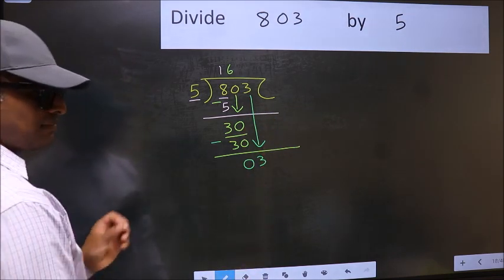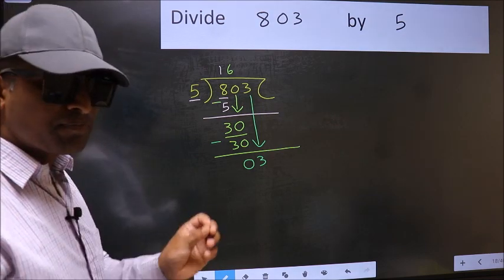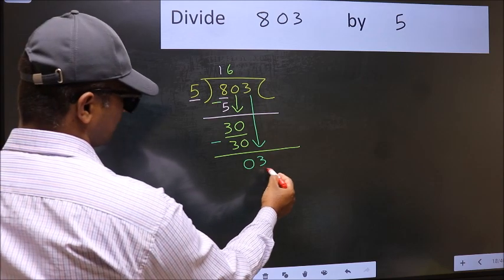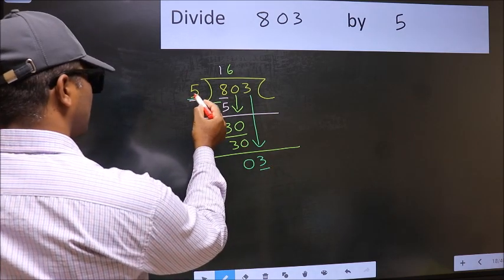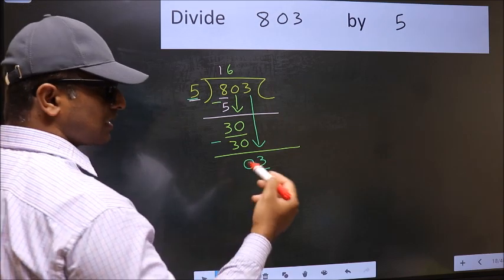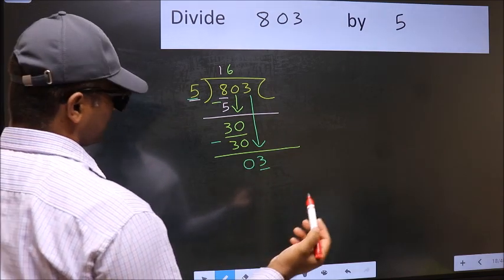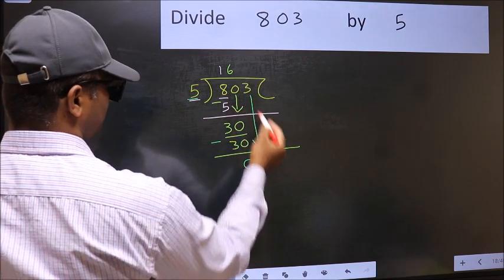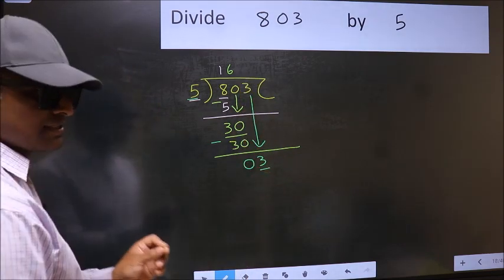After this step, the mistake happens. And the mistake is this. Here we have 3 and here 5. 3 is smaller than 5. So, what many do is they directly put dot and take 0. Which is wrong.